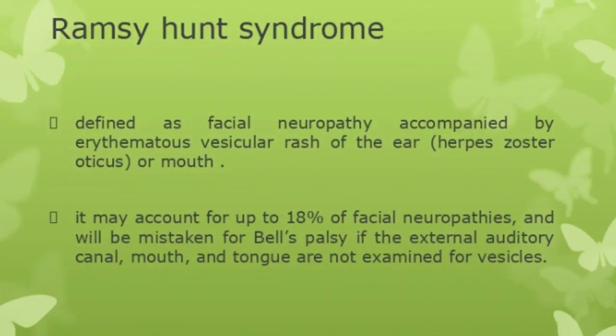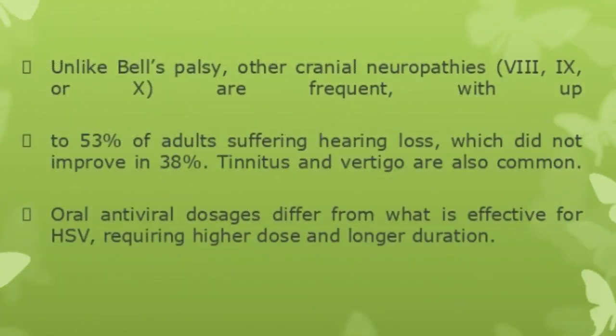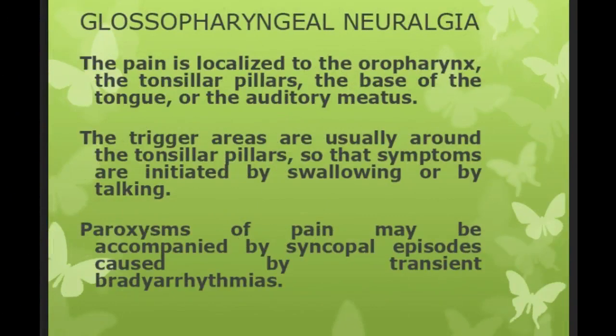Ramsay Hunt syndrome is defined as facial neuropathy accompanied by an erythematous vesicular rash of the ear — called herpes zoster oticus — or vesicular rash of the mouth. It may account for up to 18% of facial neuropathies and may be mistaken for Bell's palsy if the external auditory canal, mouth, and tongue are not examined for vesicles. Unlike Bell's palsy, in Ramsay Hunt syndrome other cranial neuropathies can occur; involvement of the 8th, 9th, and 10th cranial nerves is frequent, with up to 53% of adults suffering hearing loss that did not improve in 38%. Tinnitus and vertigo are also common. Treatment requires higher antiviral doses and longer duration than for Bell's palsy.